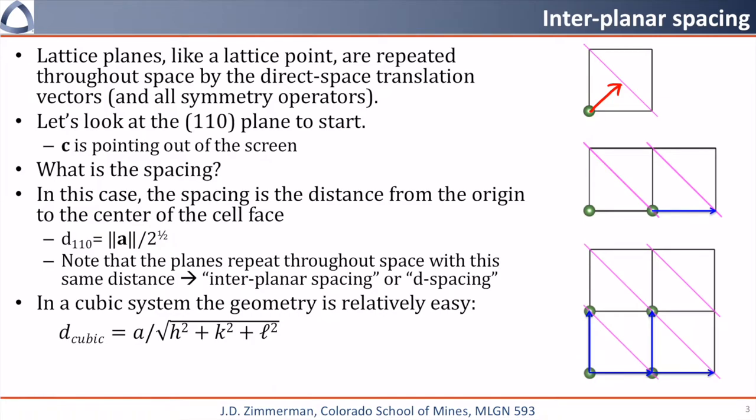In cubic lattices, the distance is a divided by the square root of the sum of h squared plus k squared plus l squared. However, as you might have guessed, the equation can get quite nasty for non-orthonormal crystals such as triclinic cells.